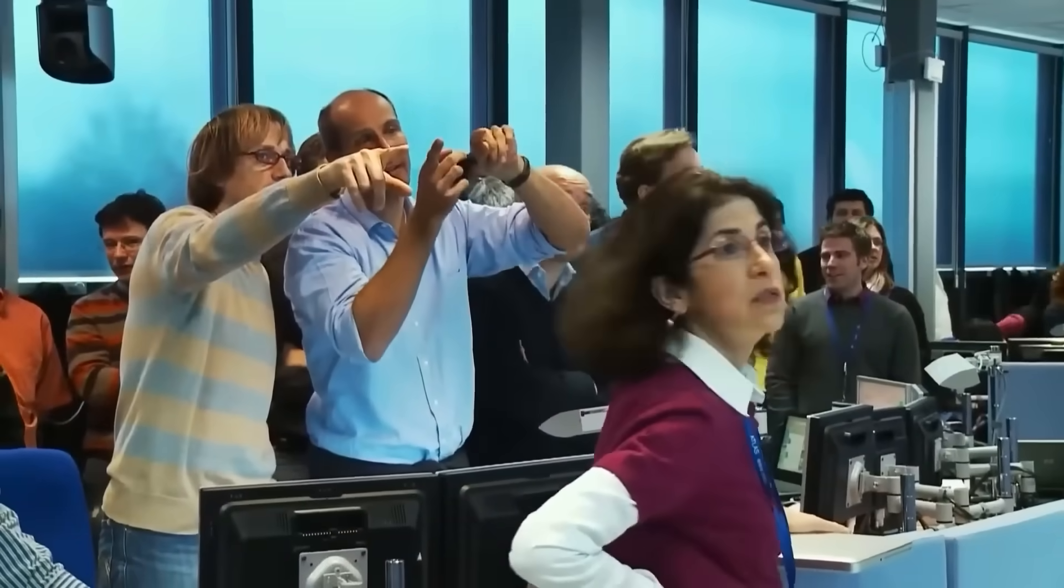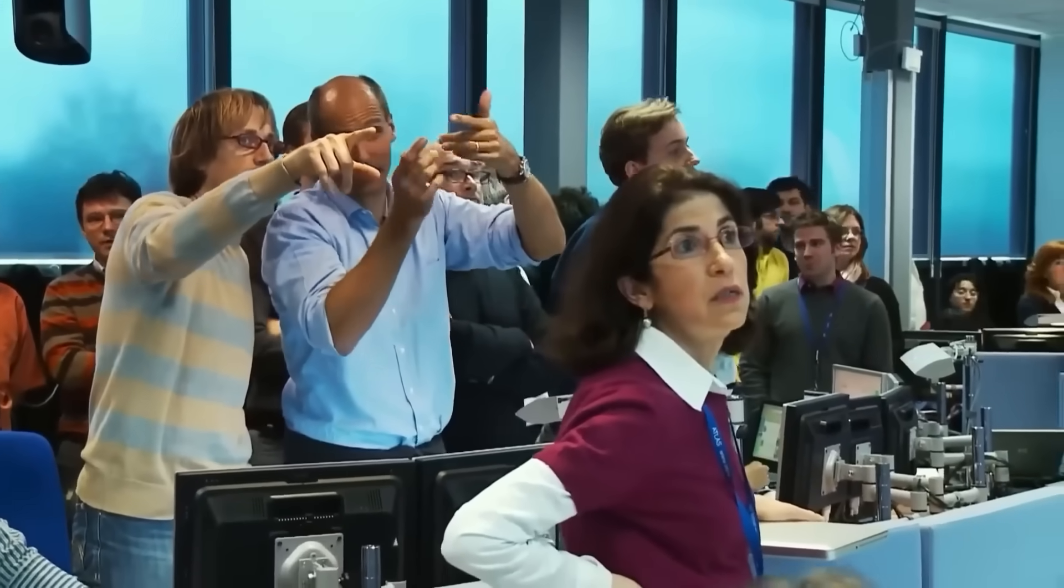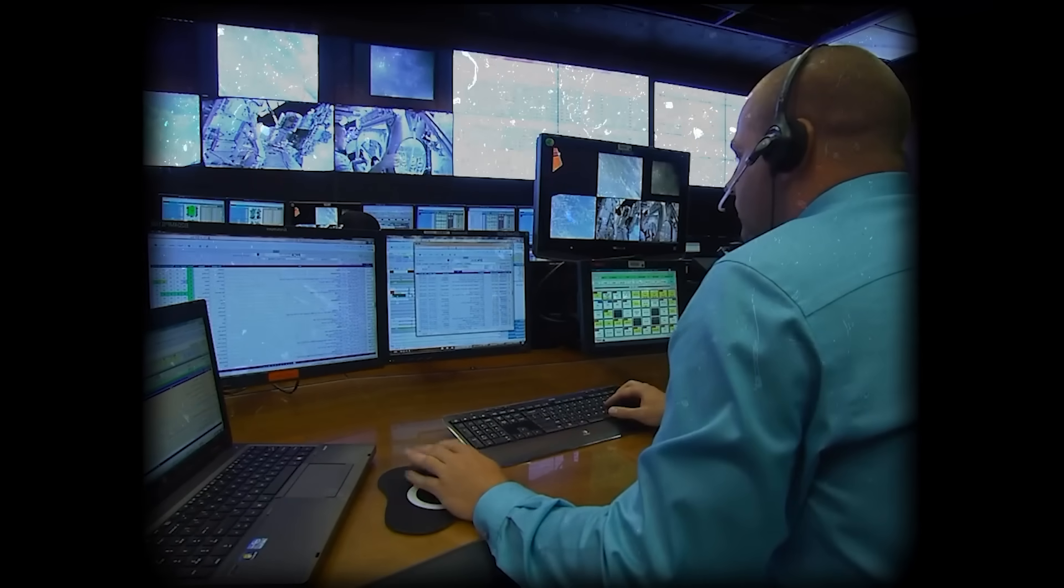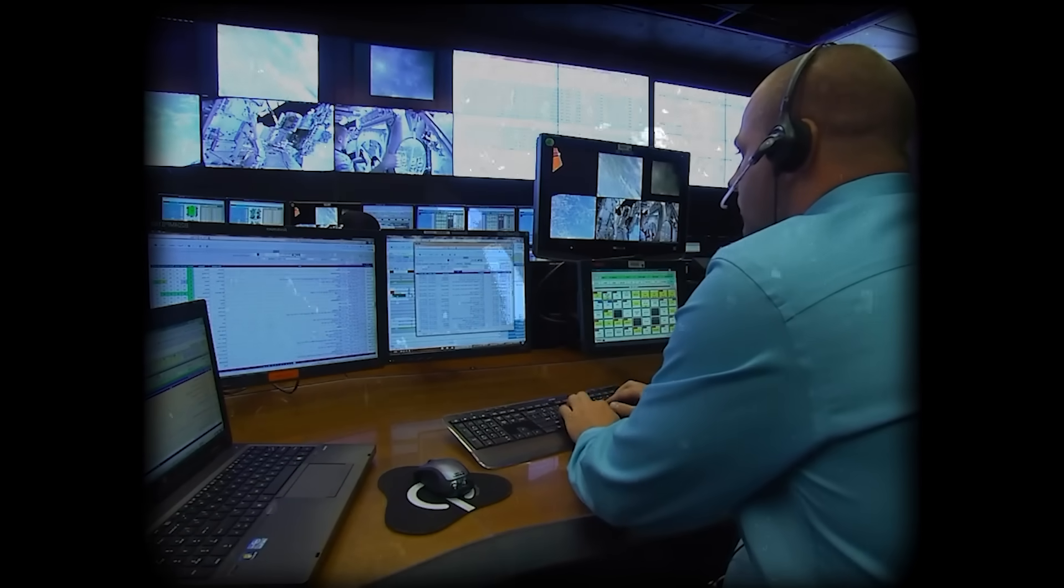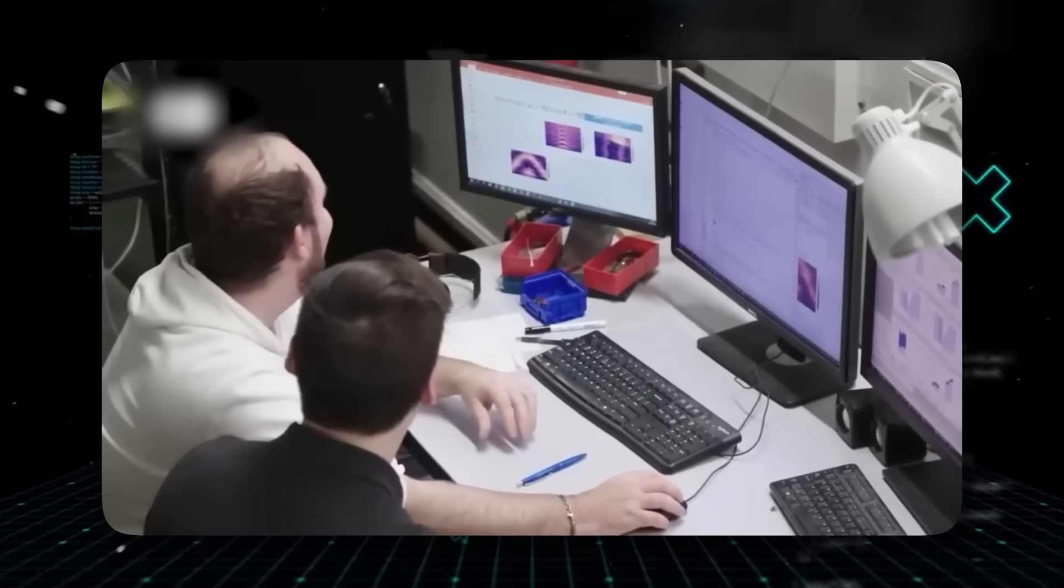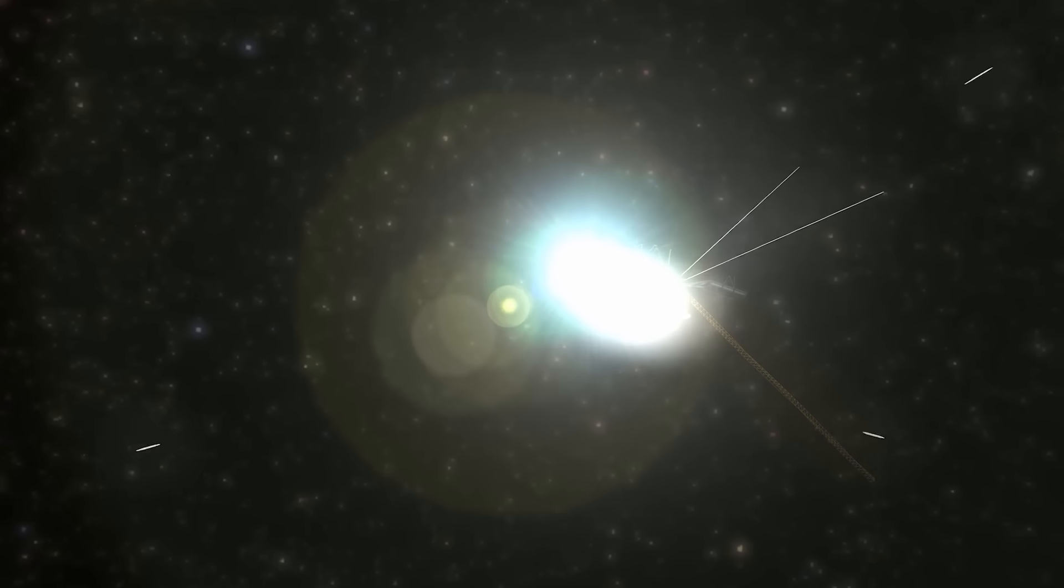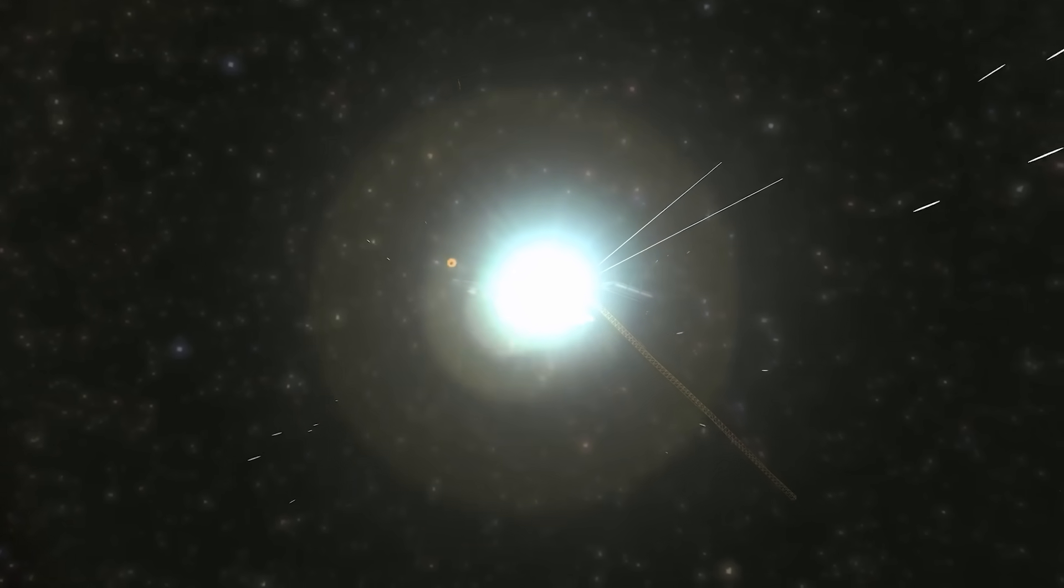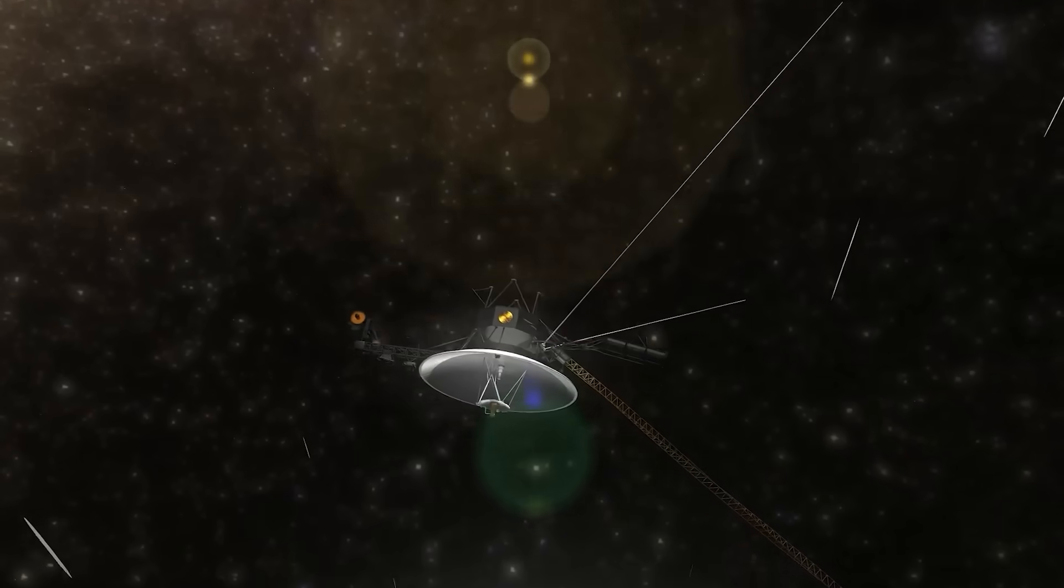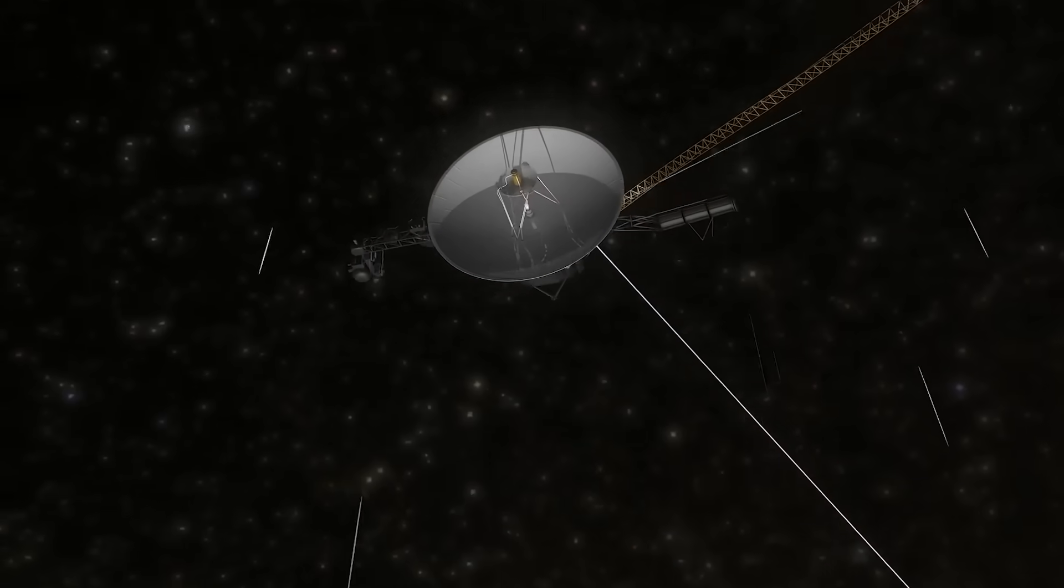Webb's spectroscopic data delivered an even bigger shock. The chemical signatures of these masses included exotic alloys and elements with half-lives so short they should have decayed billions of years ago. Yet, here they were, stable and clustered. The narrative shifted from one probe being followed to our entire solar system being studied by a swarm of silent observers. Our machines had become bait in a trap that was set long ago.